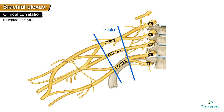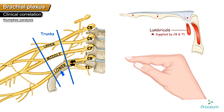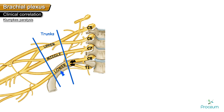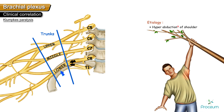Klumpke's paralysis occurs due to damage to the lower trunk of the brachial plexus, which is formed by nerve roots C8 and T1. This injury typically occurs when there is hyperabduction of the shoulder — undue abduction between the arm and trunk — such as when clutching onto something during a fall, causing lower trunk injury.